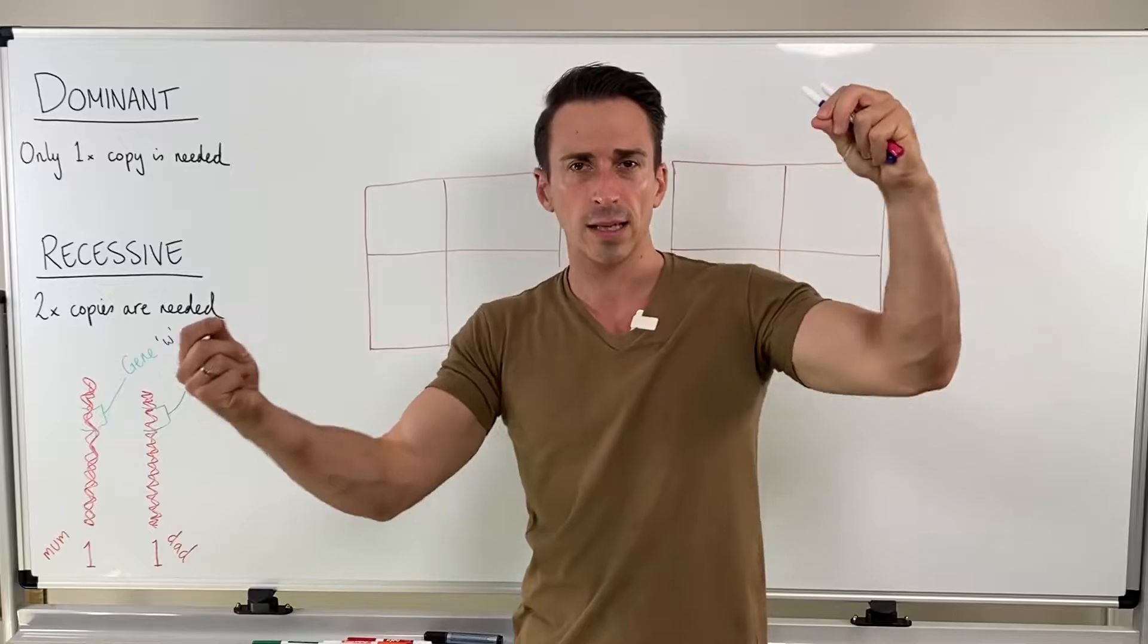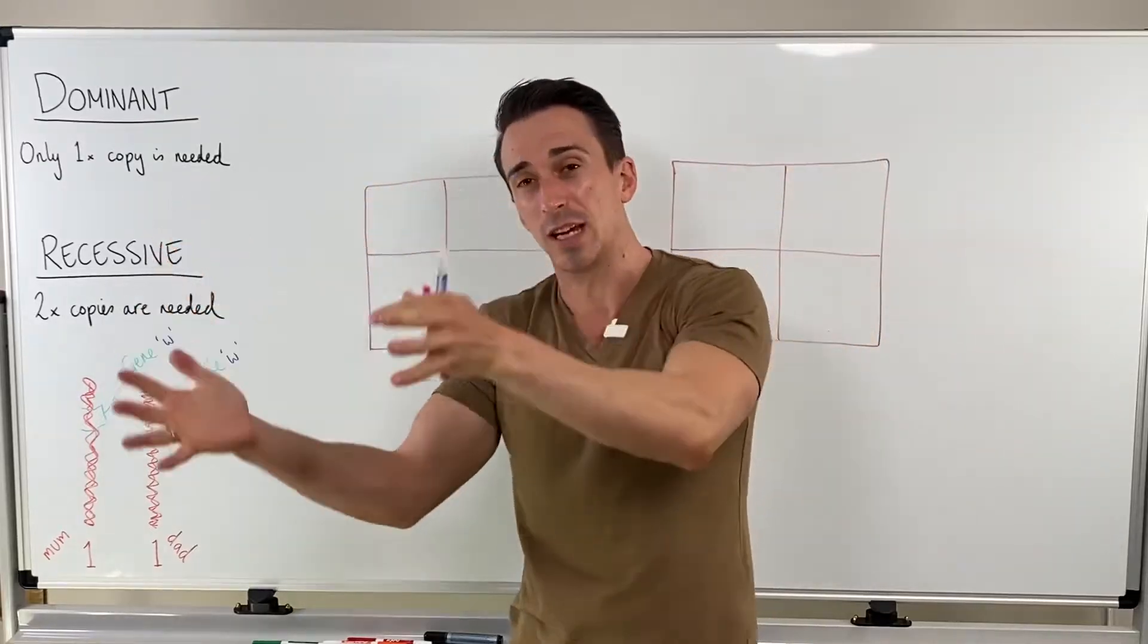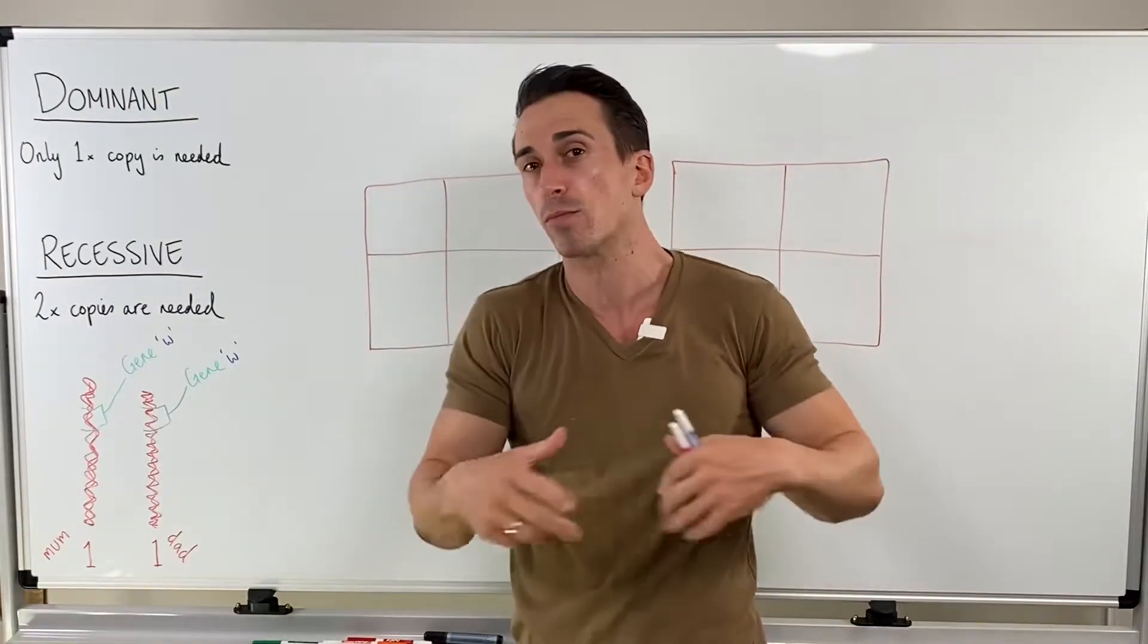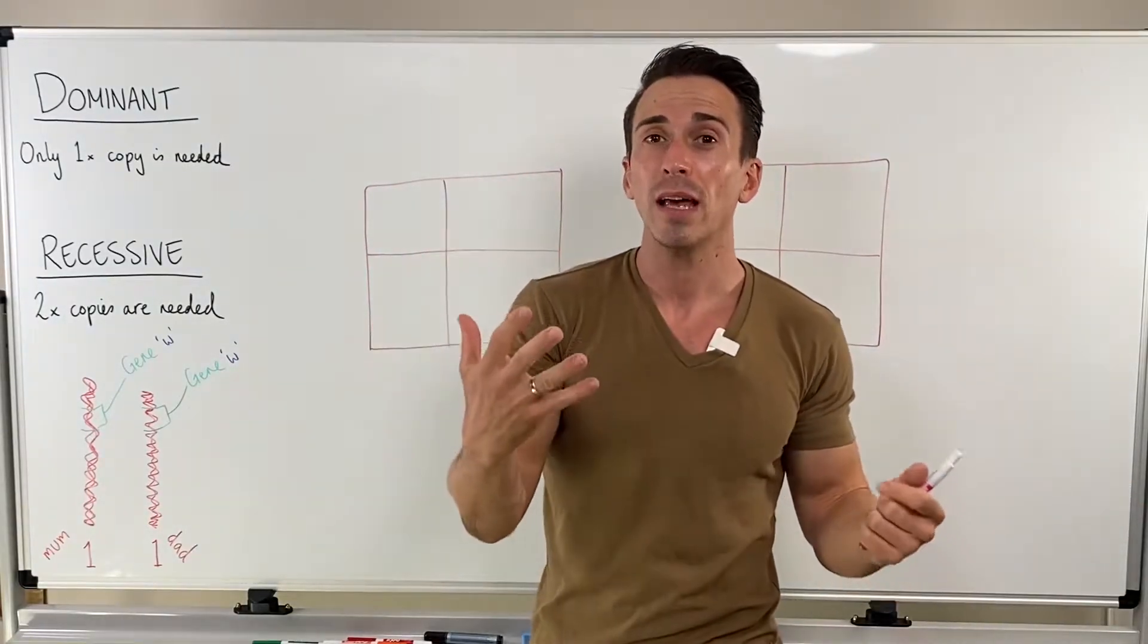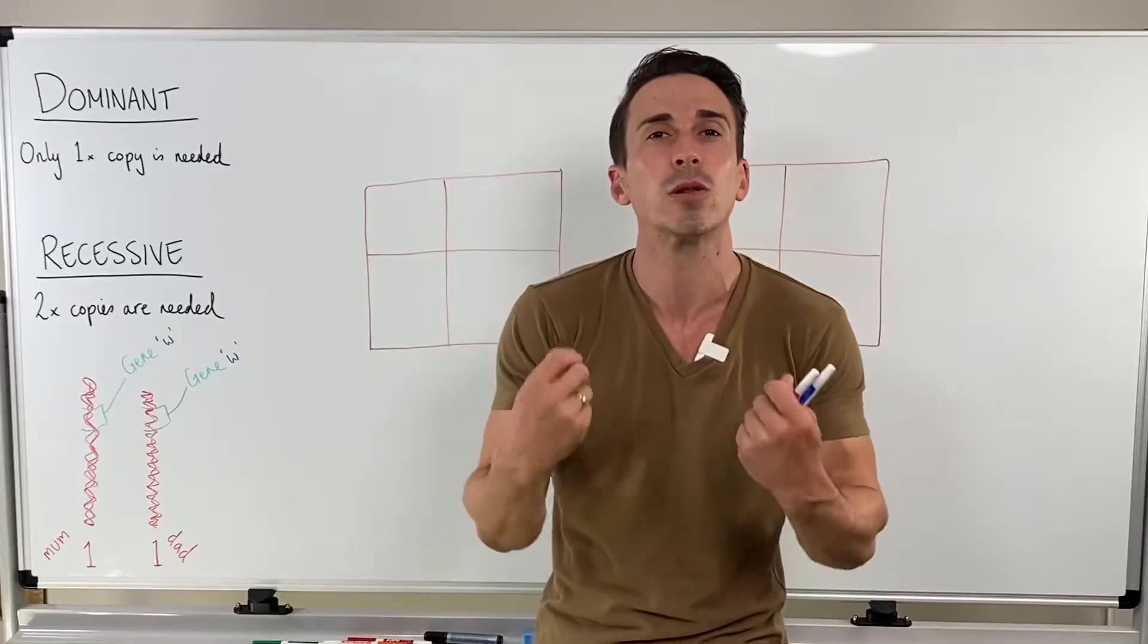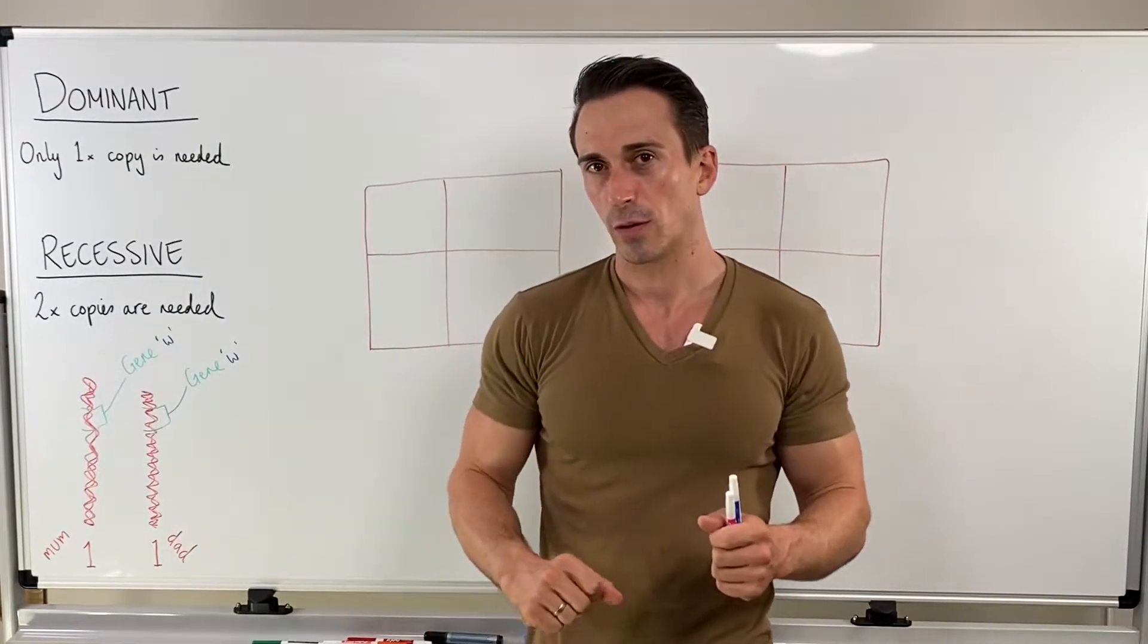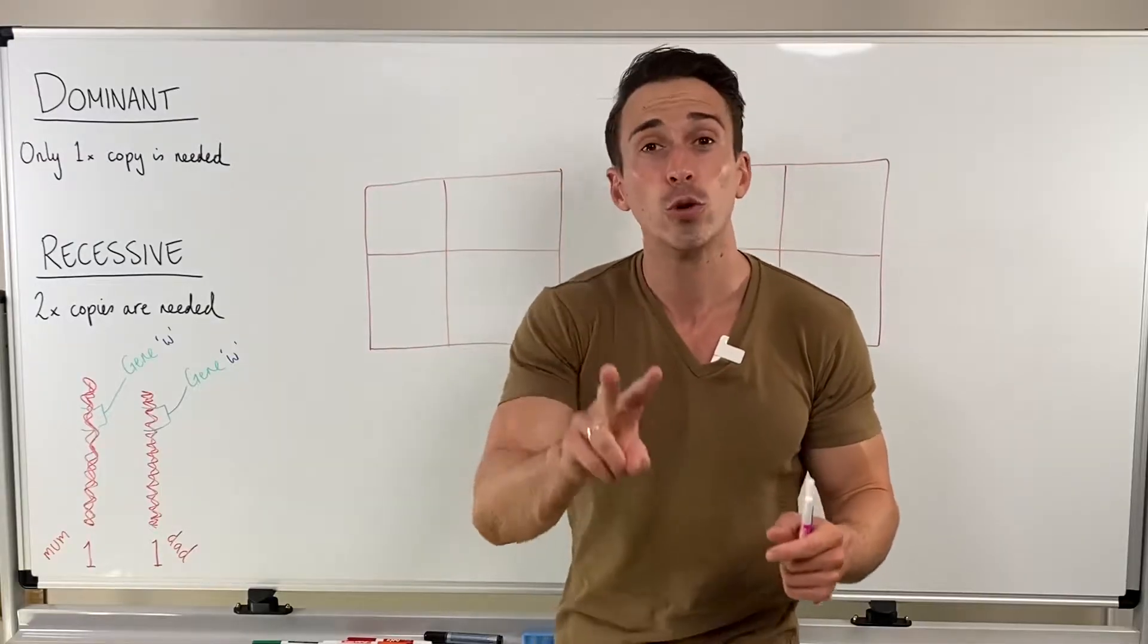And that if we unravel this DNA, there's going to be discrete segments of DNA that make genes. And these genes encode for proteins and proteins do all the stuff in our body including giving us certain traits, making us look the way we look. But because we have two chromosomes of each one, we're also going to have two copies of every gene.